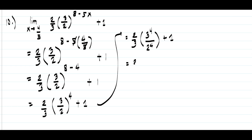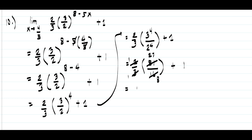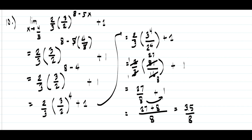Distributing the exponent 4 gives us 3 raised to 4 over 2 raised to 4, which is 81 over 16. Simplifying 2 over 3 times 81 over 16: 81 and 3 are divisible by 3 giving 27 and 1, and 2 and 16 are divisible by 2 giving 1 and 8, so we get 27 over 8, plus 1. Writing 1 as 8 over 8 gives 27 plus 8 over 8, which is 35 over 8, or approximately 4.375.